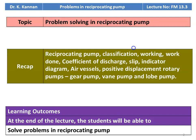In the earlier two lectures on the reciprocating pump, we discussed the theory part: the definition of reciprocating pump, classification of reciprocating pump, working of a single stage and double stage, single acting and double acting reciprocating pump. We calculated the work, defined the coefficient of discharge, slip and percentage of slip, drawn the indicated diagram for the inlet and outward stroke, discussed the use of air vessels, and also discussed positive displacement rotary pumps like gear pump, van pump and lobe pump. Here we are going to solve problems in the reciprocating pump.